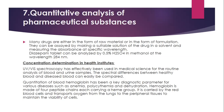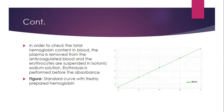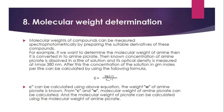Hemoglobin is made of four peptide chains, each carrying a heme group. It is carried by red blood cells and transports oxygen from the lungs to peripheral tissue to maintain the viability of cells. To check the total hemoglobin content in blood, the plasma is removed from anticoagulated blood and the erythrocytes are suspended in isotonic sodium solution. The absorbance is then compared against a standard curve prepared with freshly prepared hemoglobin.